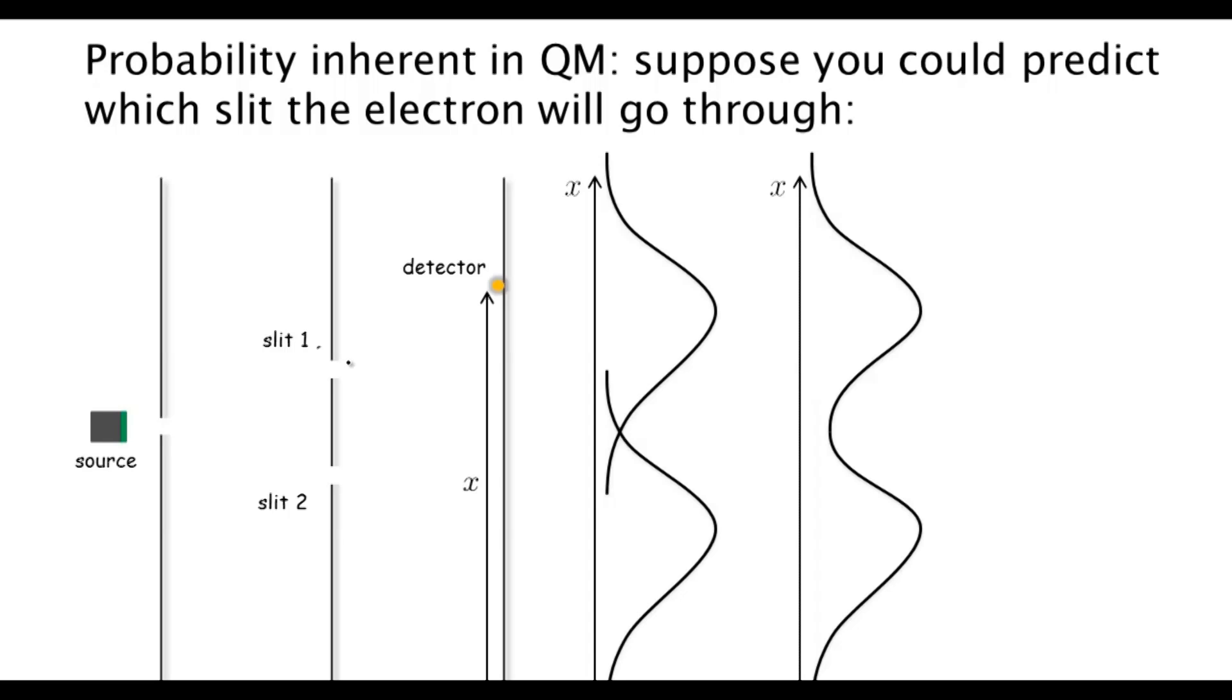...then again we wouldn't get an interference pattern. So the fact that we do get an interference pattern tells us that in fact...